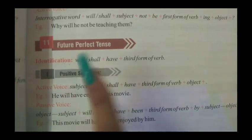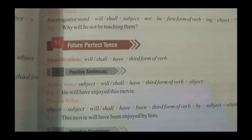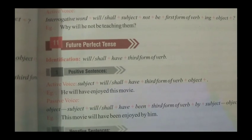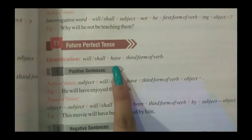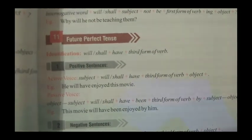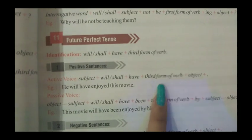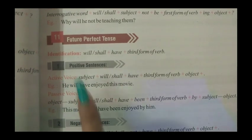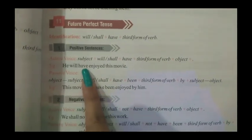First we are going to study the identification: will/shall. We always use will/shall in future tense. The add-on in future perfect tense is 'have' and the third form of verb. So we will use will/shall, have, third form of verb, and object. For example: 'He will have enjoyed this movie.'